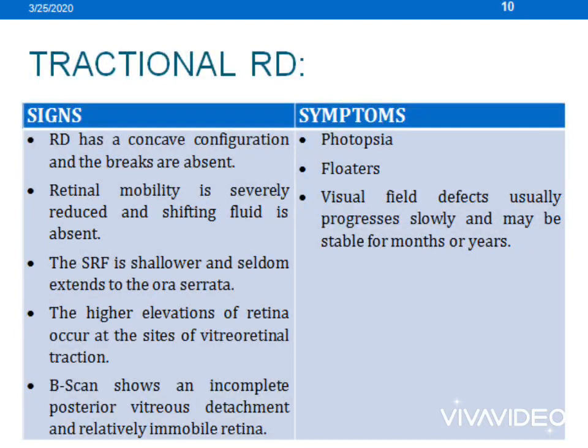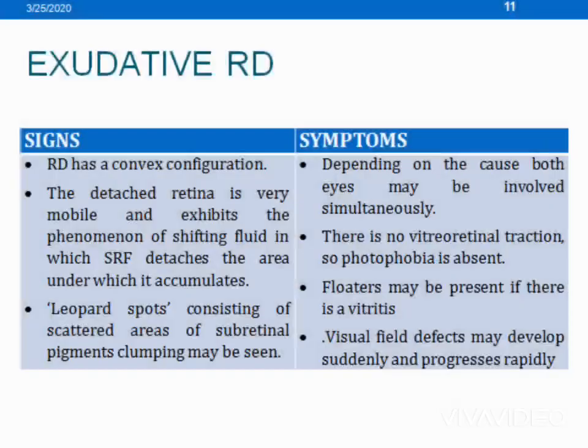Tractional RD usually presents where the RD has a concave configuration. The sub-retinal fluid is shallow with high elevation of the retina, and B-scan shows an incomplete posterior vitreous detachment.